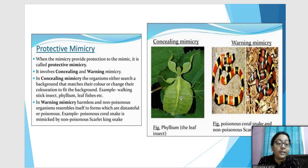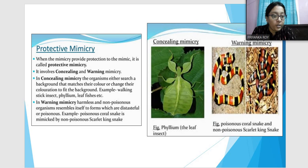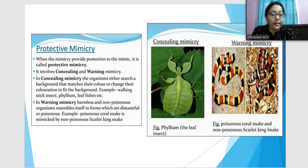The next type is warning mimicry, where the poisonous coral snake is mimicked by the non-poisonous scarlet king snake. If a non-poisonous snake mimics a poisonous snake, predators will be alarmed and will not attack it. So protective mimicry is of two types: concealing mimicry and warning mimicry.